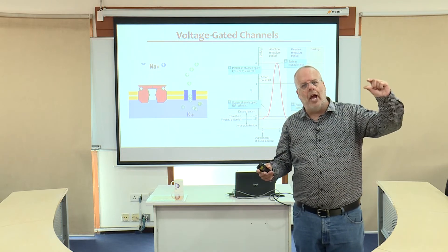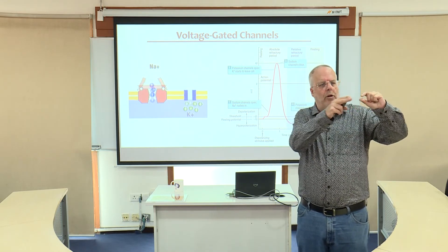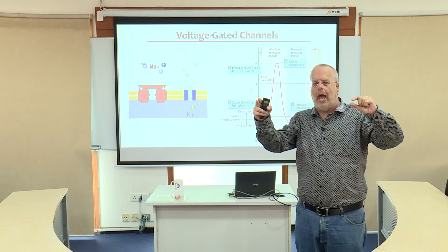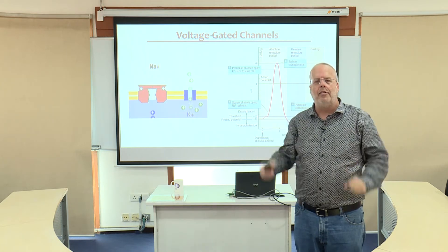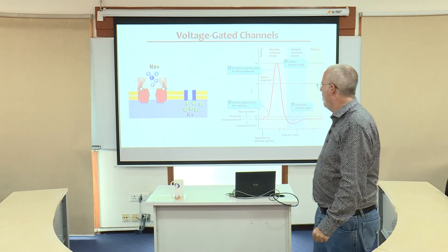The action potential starts at the axon hillock and very quickly travels all the way down the axon until it invades the terminals at the end.